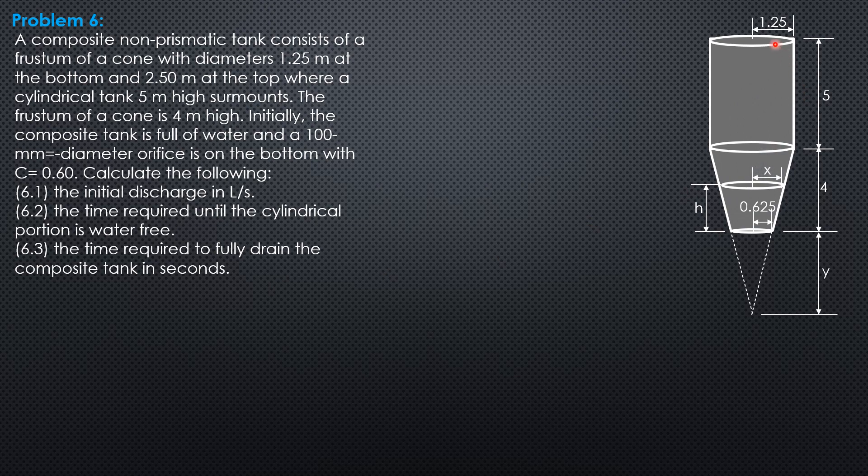So let's do the figure to analyze the problem. For the first initial discharge, the orifice is here on the bottom and the head is 9 meters. Therefore, Q is C A₀ √(2gH) where head is 9 meters. So Q is equal to 0.6 times π(0.05)² √(19.62 × 9) × 1000 to convert the discharge to liters per second. So the discharge is 62.62 liters per second.